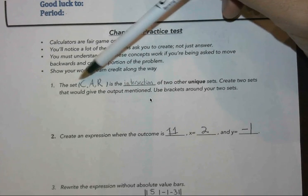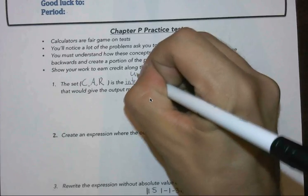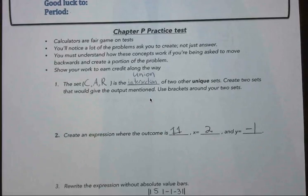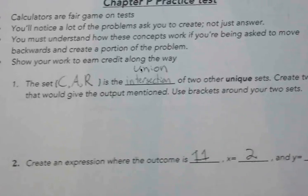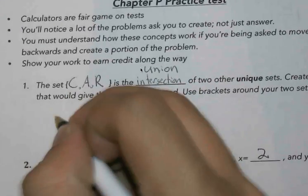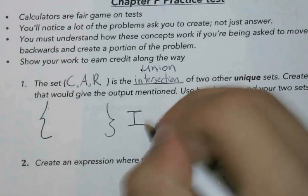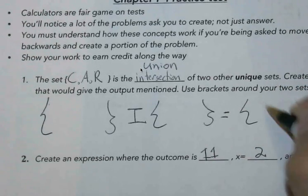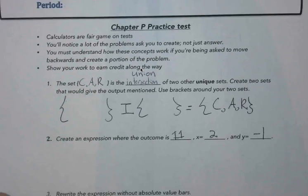With this problem, the set's going to be given to you, you might be asked for either the intersection or the union of two unique sets that would create this. Ideally, you should know the difference between union and intersection. For this one in particular, I'm going to take intersection. So I know that if I have one set and I have the intersection of that set with the second set, this should be equal to C A R L. So those are the three elements in that final set.